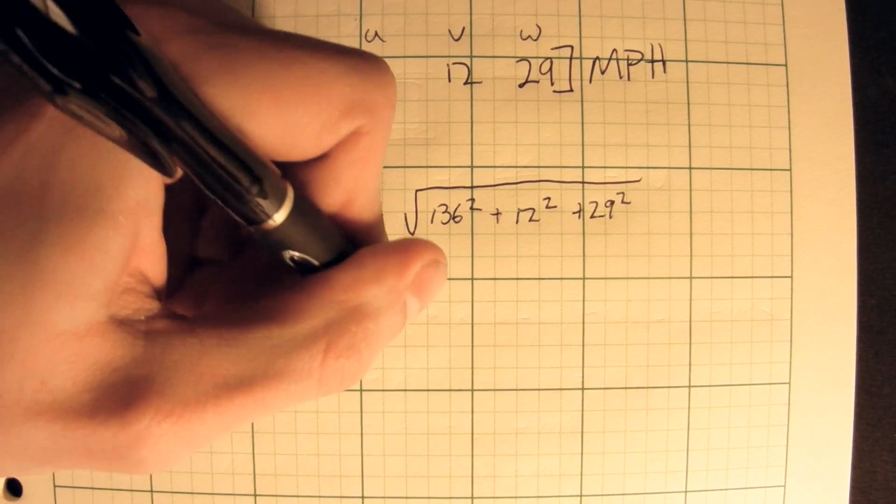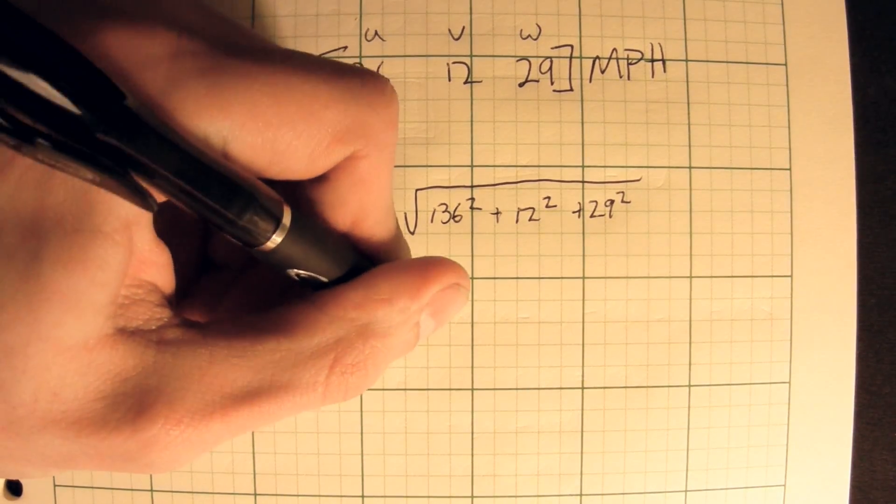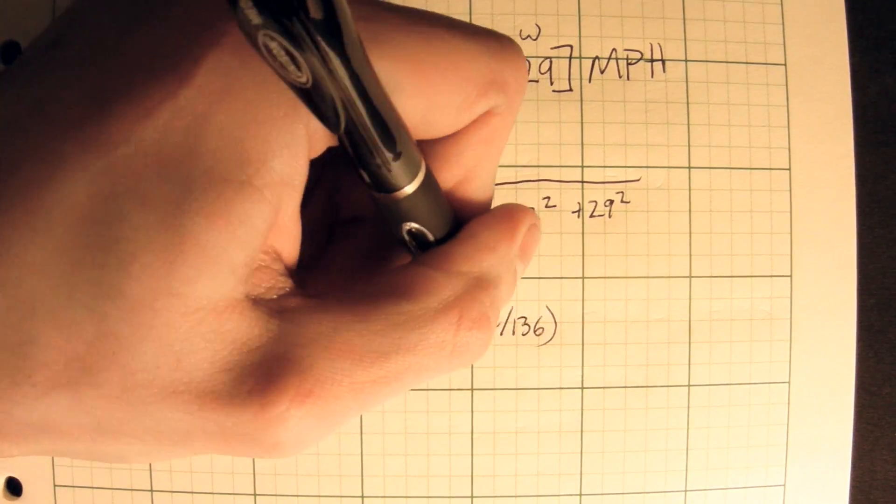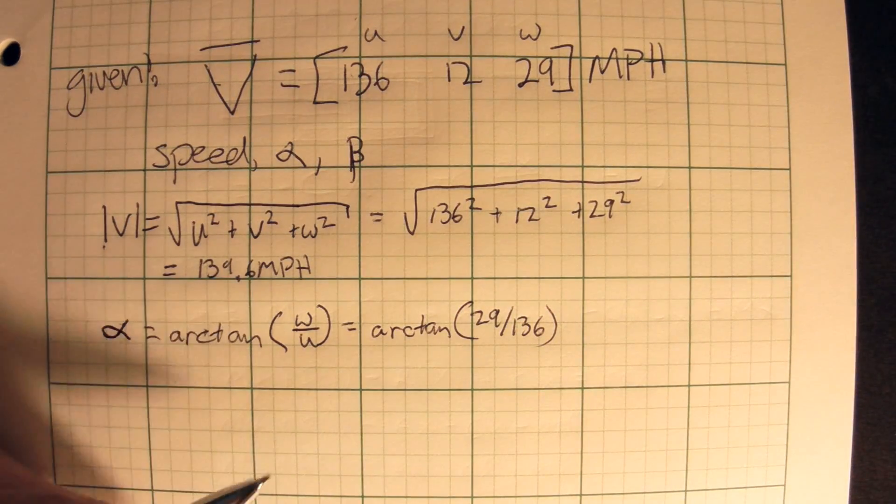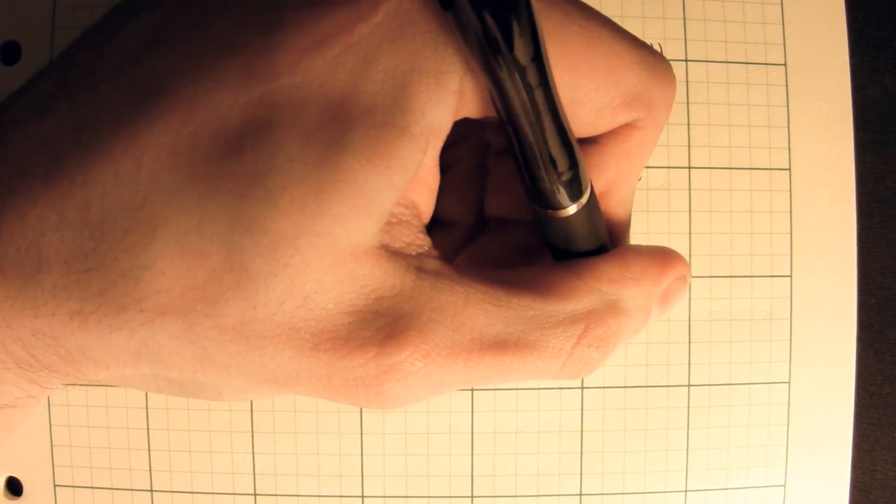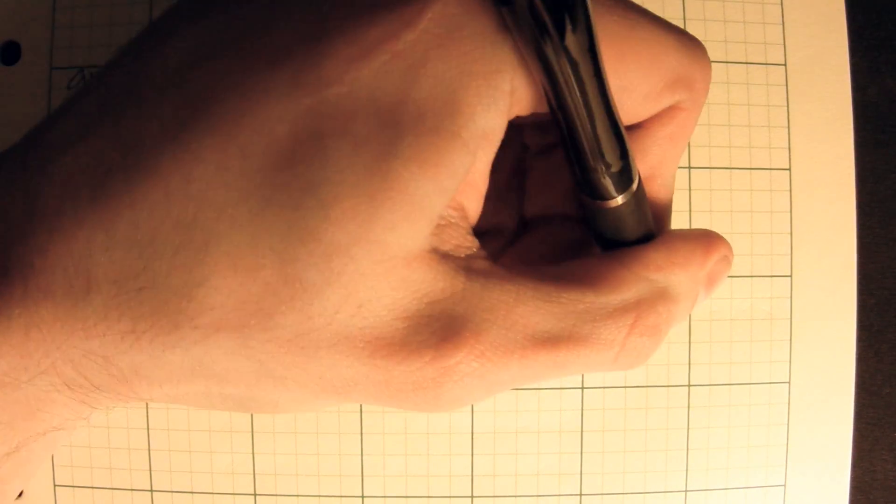So that is, turns out when we plug in a number that's equal to the arc tangent of 29 over 136. If we plug that into a calculator, pretty easy. In degrees, that is 11.76 or 78 degrees.